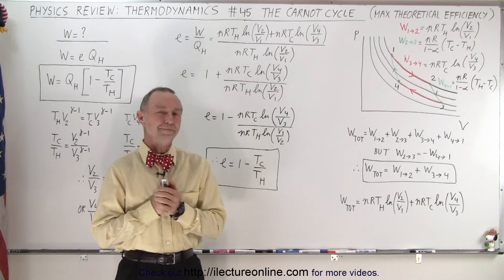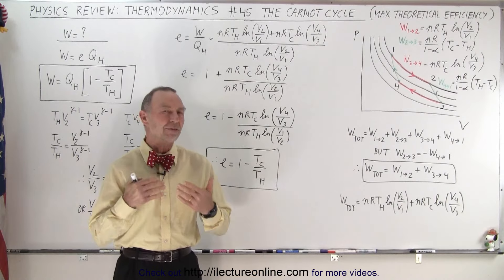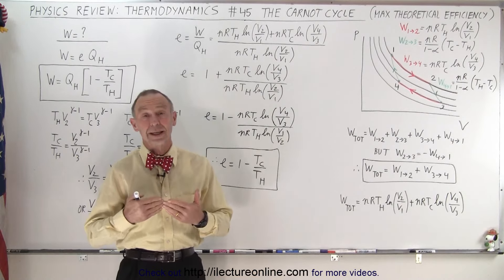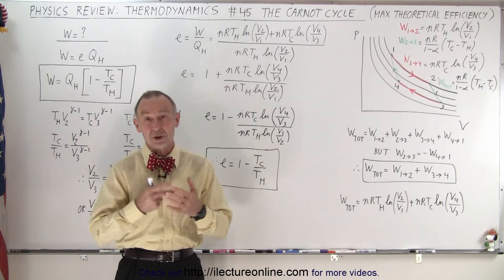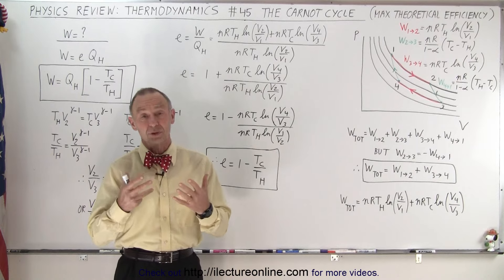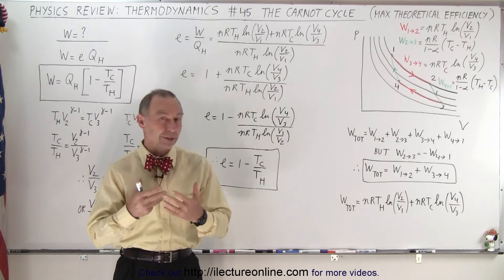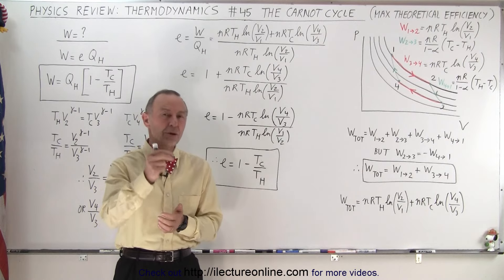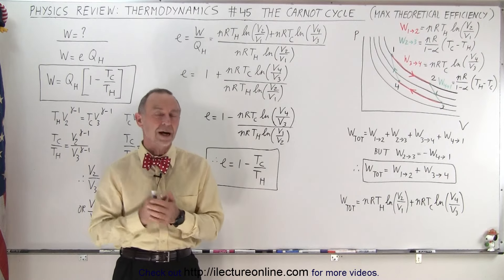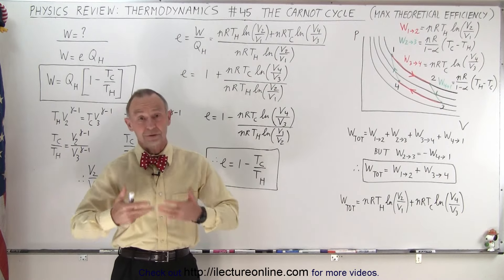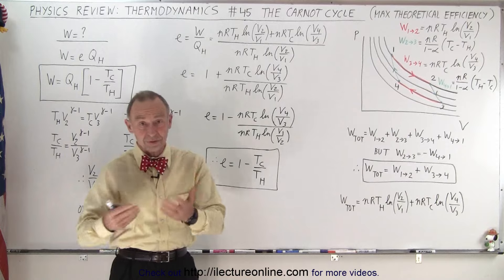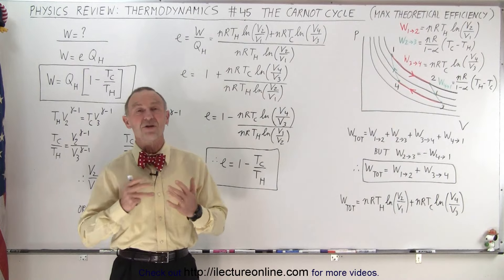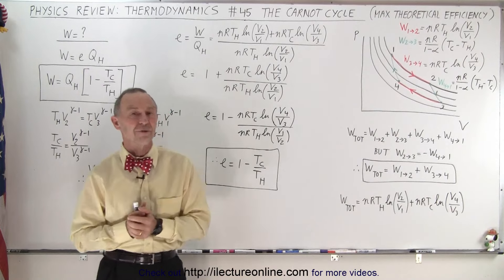Welcome to iLectroOnline. In the previous video, we saw that the efficiency of the Carnot engine, which is a purely theoretical engine, is equal to 1 minus T cold over T hot. We calculated what the efficiency was at different temperatures. Now we're going to see where that equation actually came from.